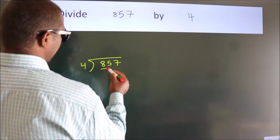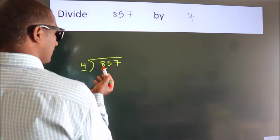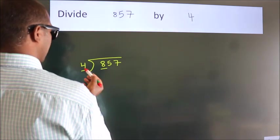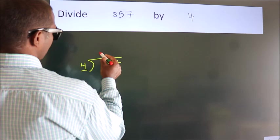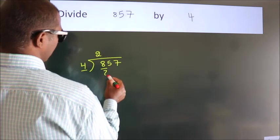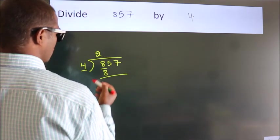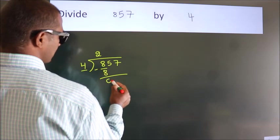Here we have 8, here 4. When do we get 8? In 4 table. 4 twos, 8. Now we should subtract, we get 0.